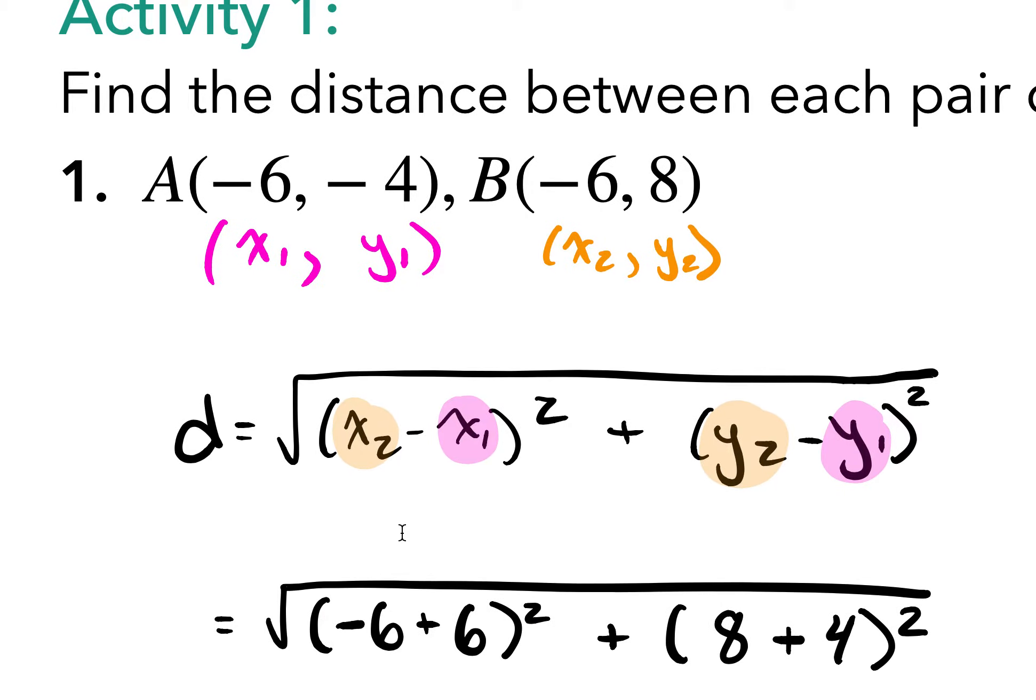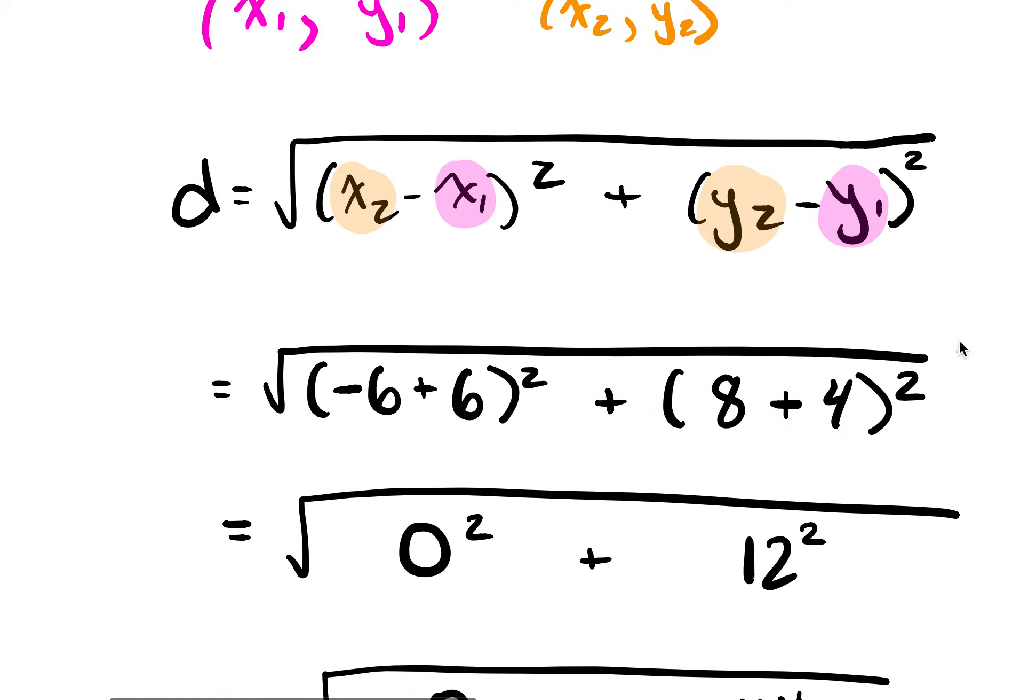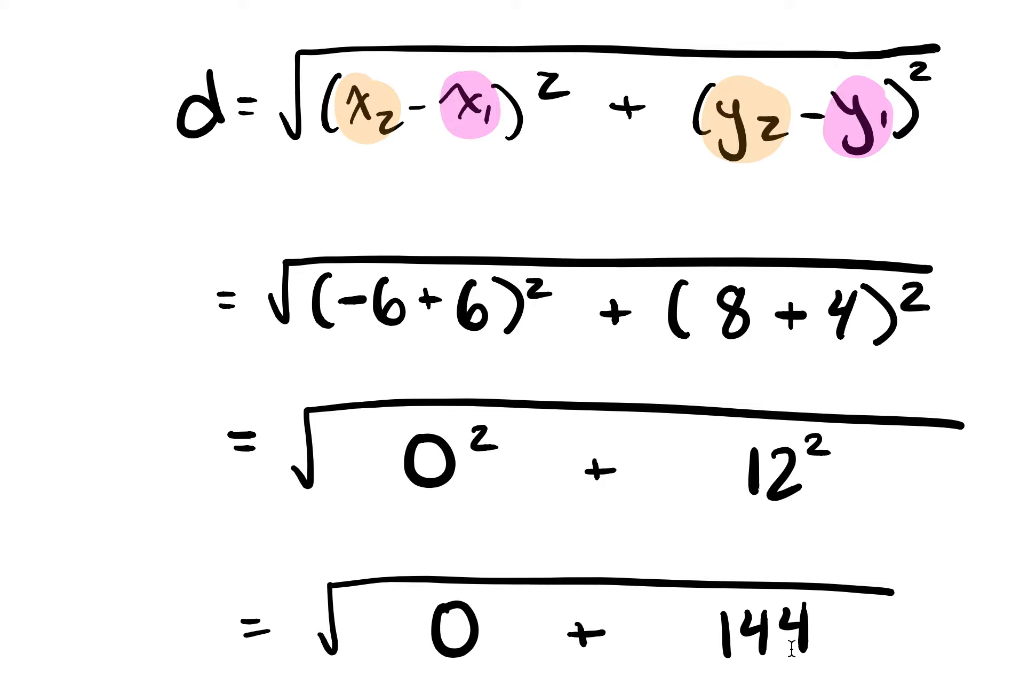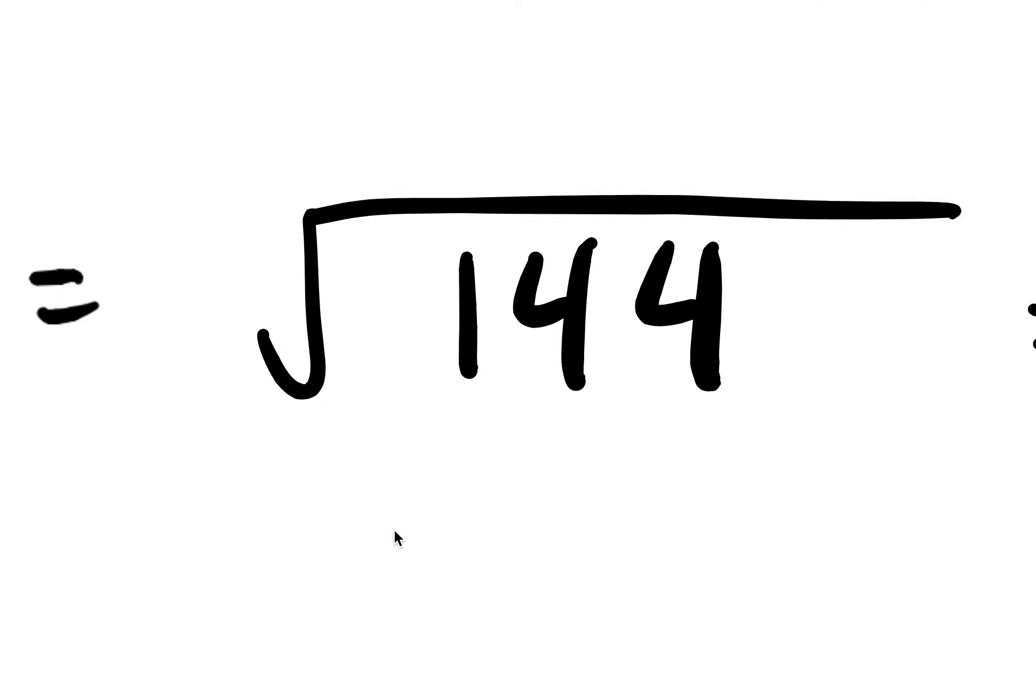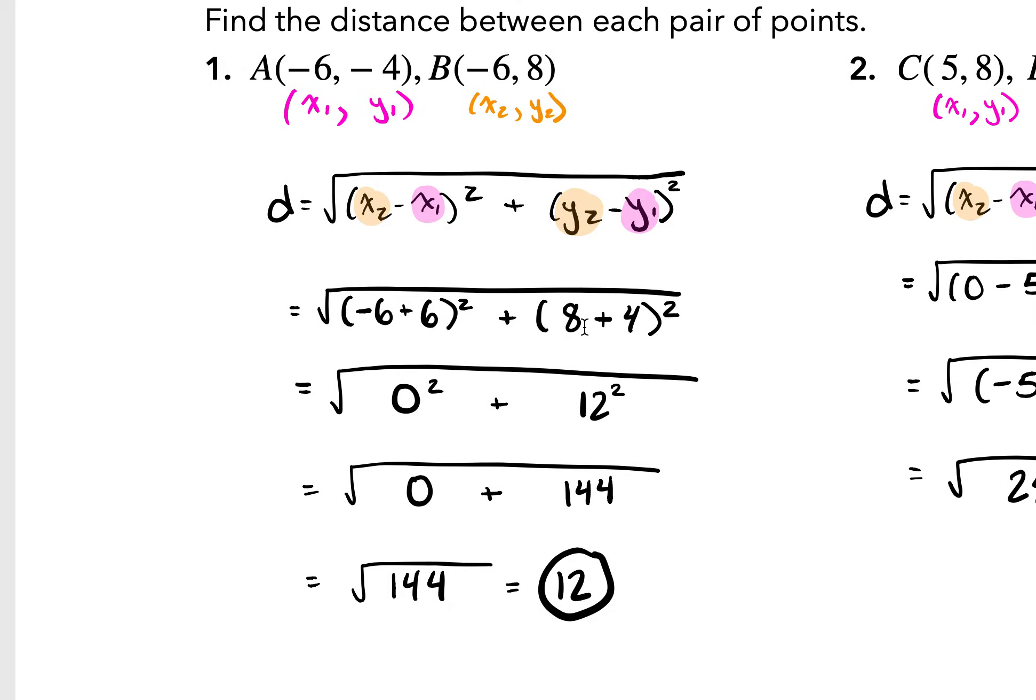x2 is negative 6, so we're going to plug that in, negative 6. x1 is also negative 6, and then minus a negative becomes positive. And then y2 is 8, and y1 is negative 4, but minus negative 4 becomes plus 4. Then, negative 6 plus 6 is 0, and 8 plus 4 is 12. So, so far, we have the square root of 0 squared, which is 0, plus 12 squared, which is 144. Then, 0 plus 144 is just 144. So we calculate the square root of 144 is 12. So those points are 12 away from each other.